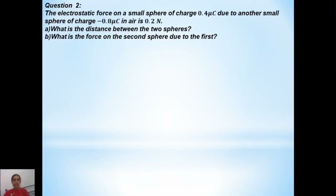The electrostatic force on a small sphere of charge 0.4 micro coulombs due to another small sphere of charge minus 0.8 micro coulombs in air is 0.2 Newton. In the first sentence they have given the situation. When a direct question is given, it's easy to simplify because we know what we have to find out.